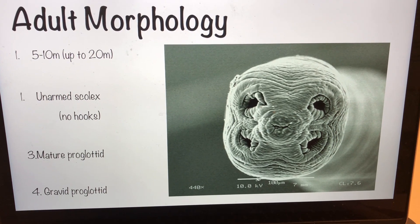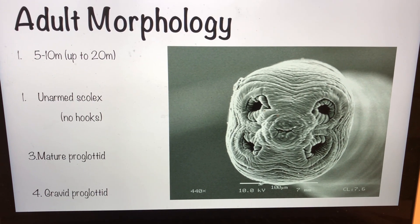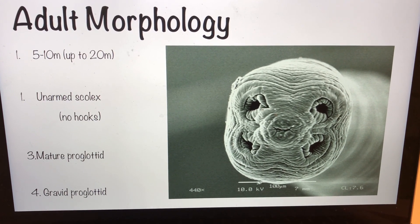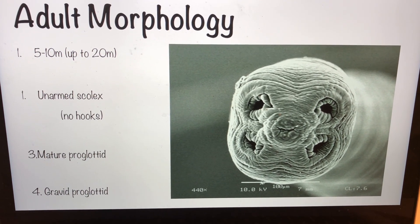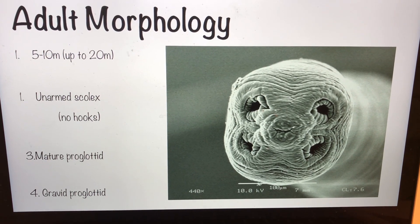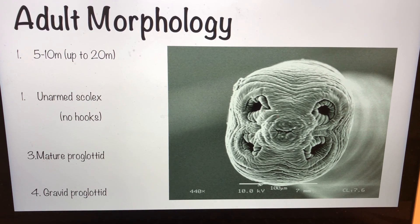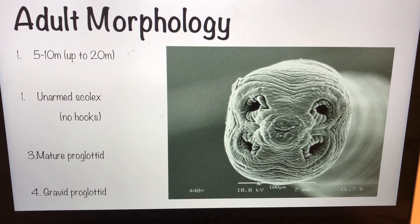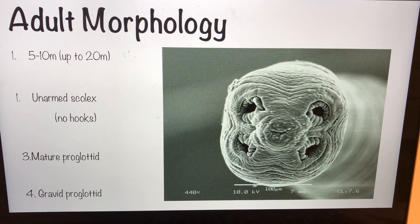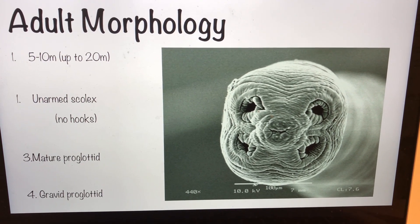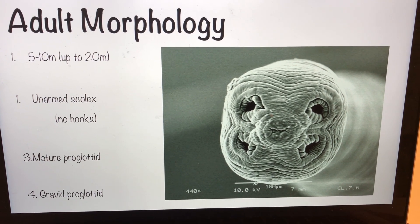The adult morphology of this worm is that it can grow up to 5 to 10 meters, and in some special cases up to 20 meters long. This worm has an unarmed scolex, meaning that its head contains no hooks. As for the segments, it has mature proglottids and gravid proglottids. Proglottids are the segments of its body that contain uterus and testes, and these worms reproduce asexually.